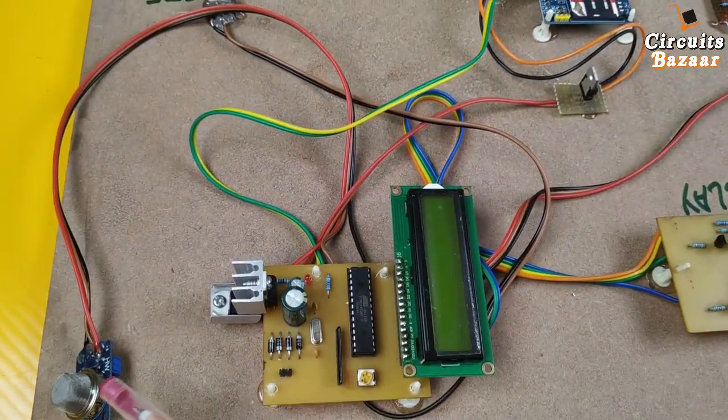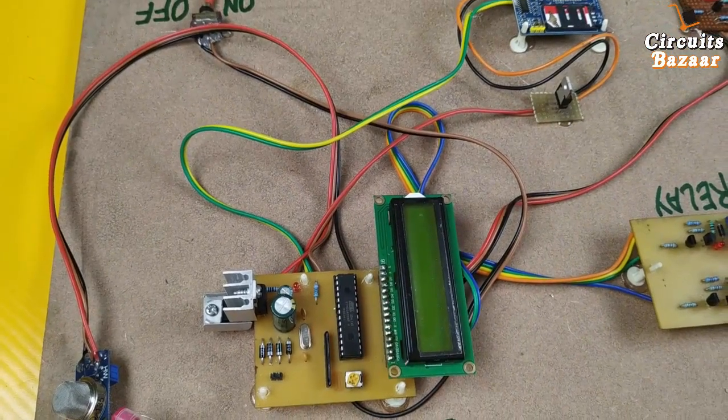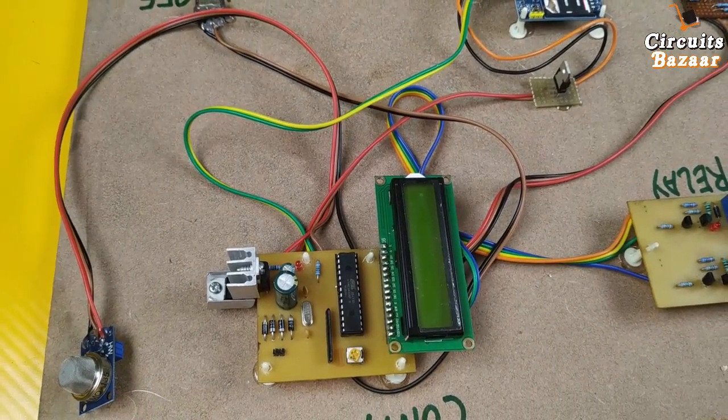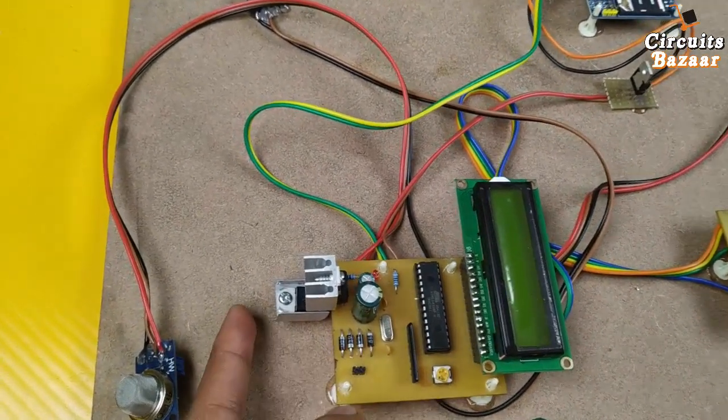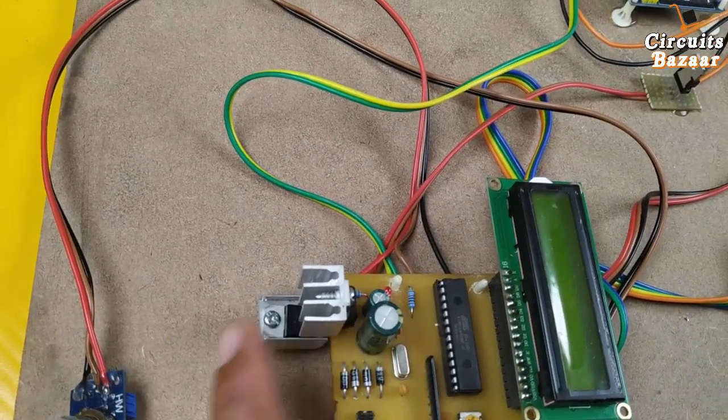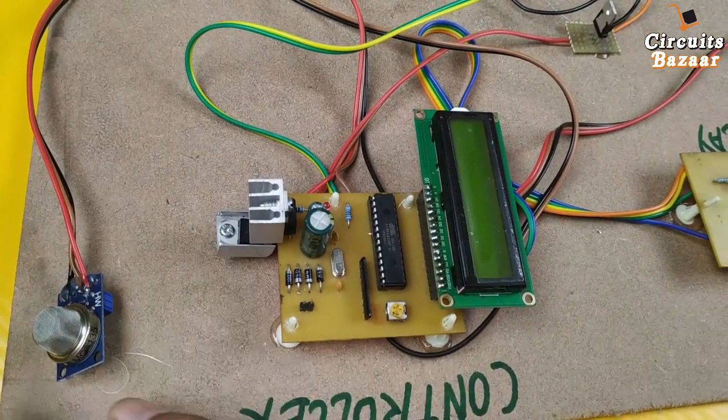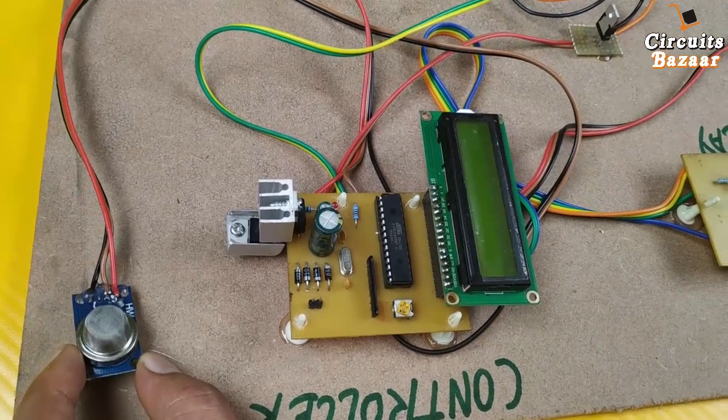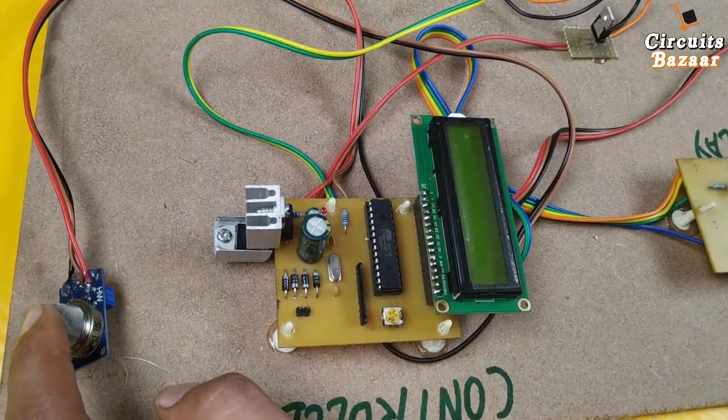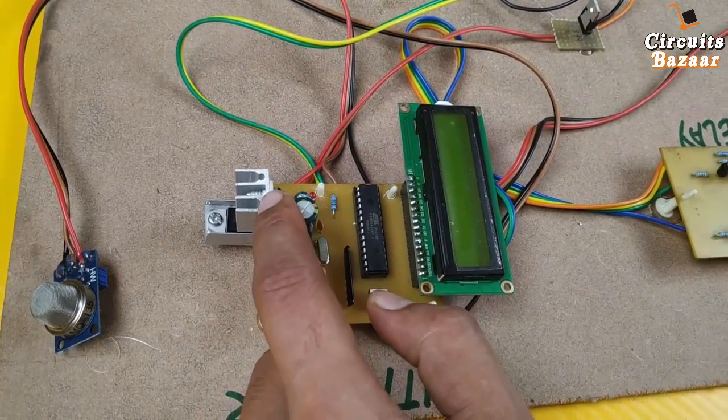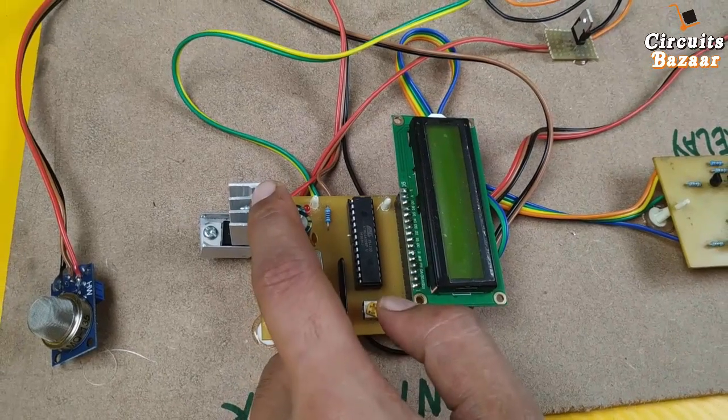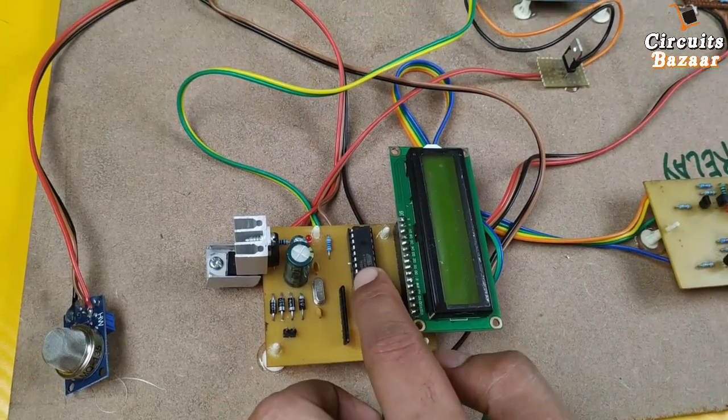This MQ-135 sensor needs 5 volt and high current. That's why we have used 7805. There are two 7805 regulators on the circuit board - this one and this one. This 7805 is for the MQ-135 sensor to provide power supply, and this 7805 will provide power supply to LCD and the microcontroller.